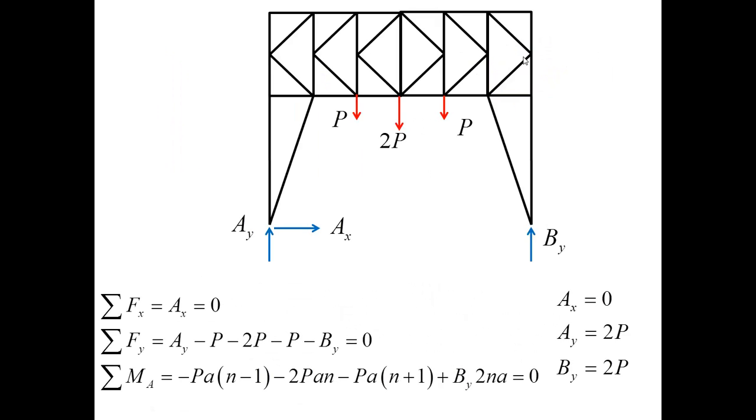I begin solving this problem by writing down equilibrium equations for the free body of the entire truss. In writing these equations, I want to point out that the sum of moments about A involves four terms. For the force 2P, the arm is equal to a times N, and that's reflected here.